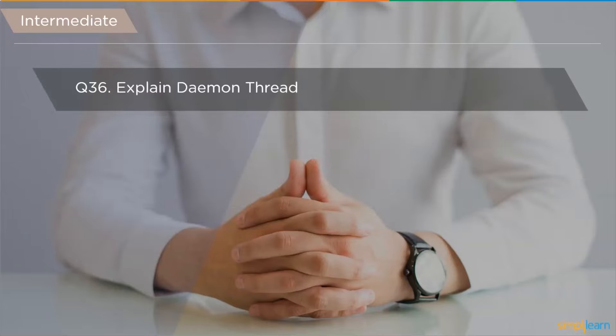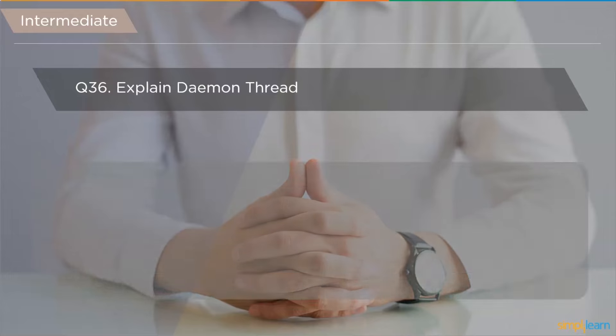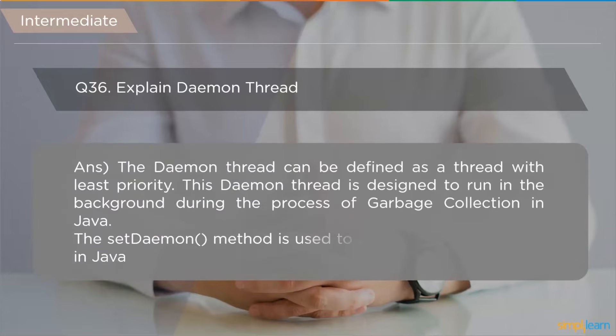The next question is: explain daemon thread. A daemon thread can be defined as a thread with the least responsibility. It is designed to run in the background during the process of garbage collection in Java. The setDaemon method is used to create a daemon thread in Java.